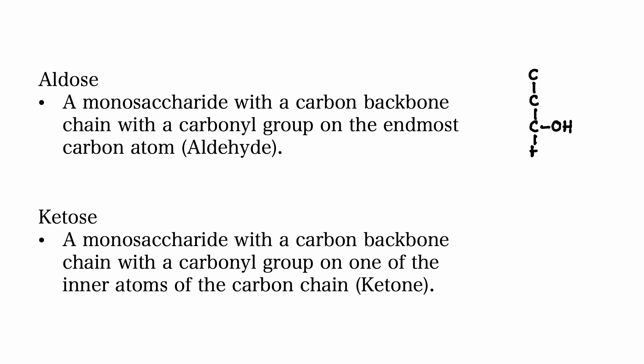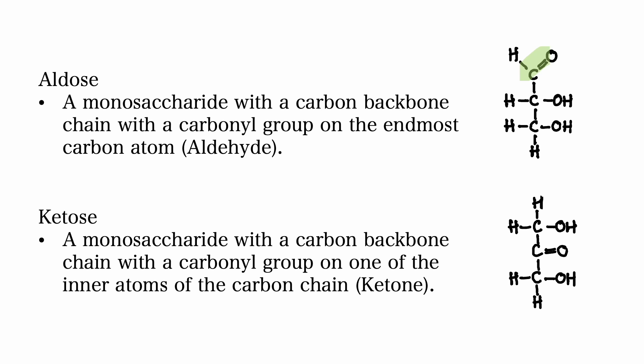An aldose is a monosaccharide — a simple sugar with a carbon backbone chain and a carbonyl group on the end-most carbon atom. This makes an aldehyde. A ketose is a monosaccharide, again a simple sugar, with a carbon backbone chain with a carbonyl group on one of the carbon atoms that are in the innermost chain. This makes a ketone.